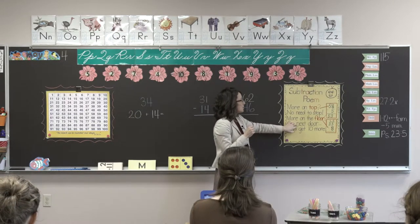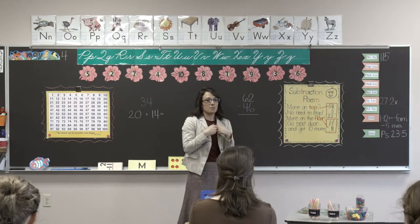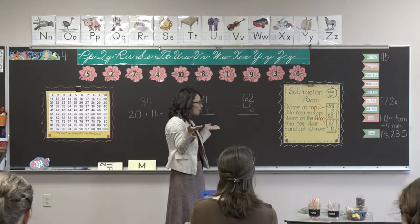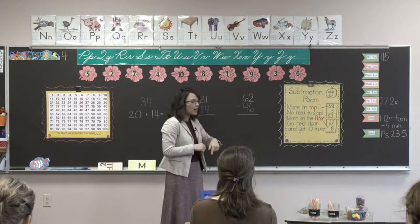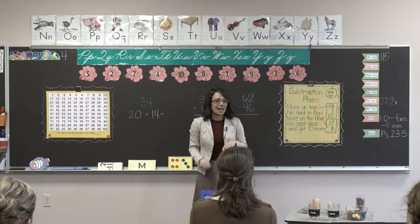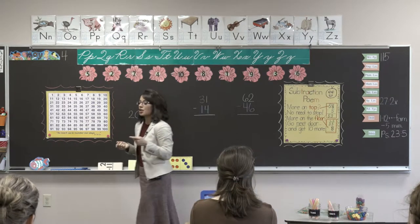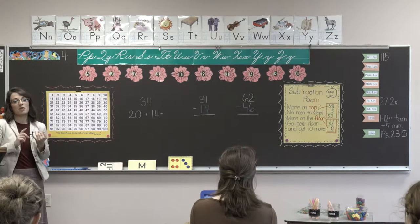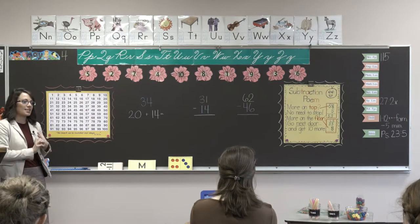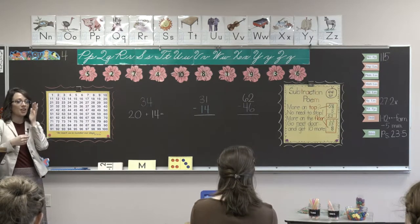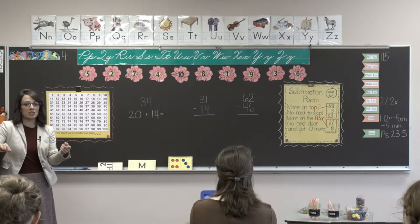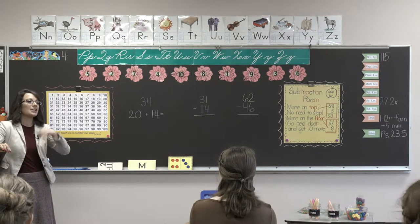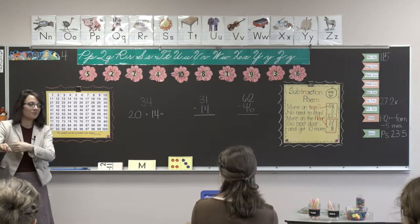Have a variety of manipulatives — I'd say three would be fine. And you can see I have the problems written on the board in different colors. You're going to have to overemphasize the order of the numbers on the board — I'll tell you why in a bit. And I also have this subtraction poem for them. So whenever there's something new, I'll read it to them first. More on the top, no need to stop. More on the floor, go next door and get ten more.